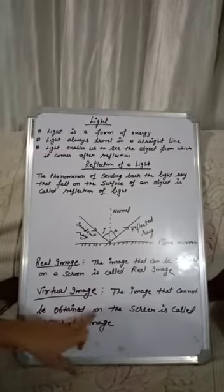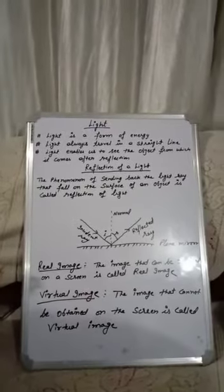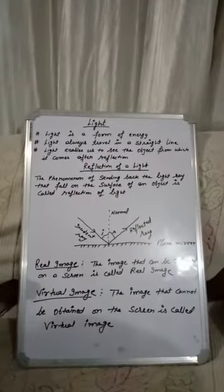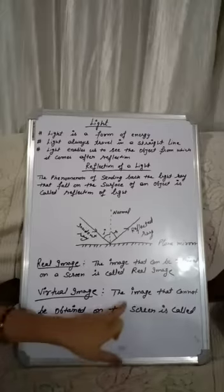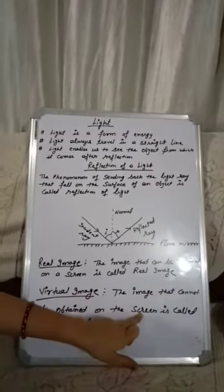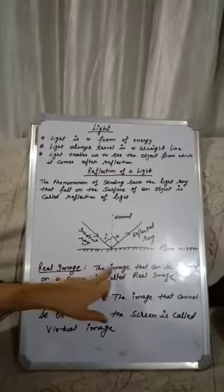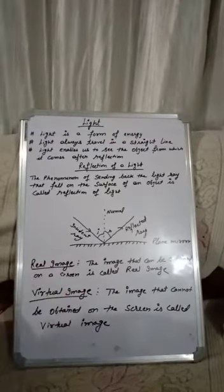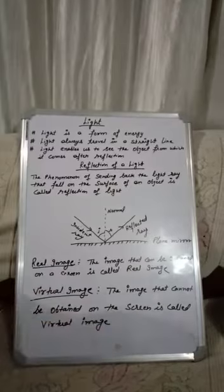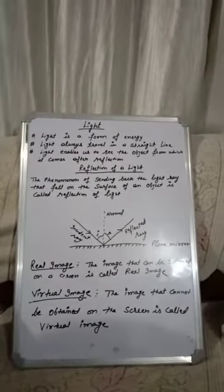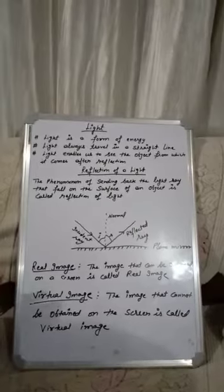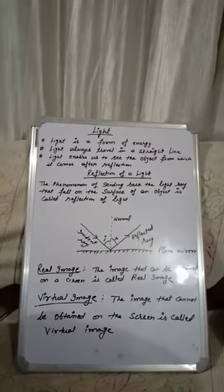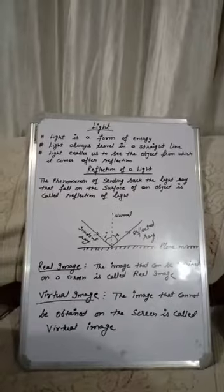The image that cannot be obtained on a screen is called a virtual image. It is always formed behind the mirror, not on the screen. The difference between them: a real image is always obtained on a screen, whereas a virtual image is always formed behind the mirror. A plane mirror, like the one we use at home, is an example of a virtual image. Thank you students.